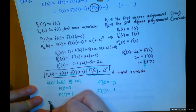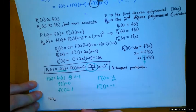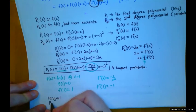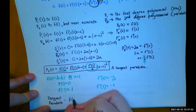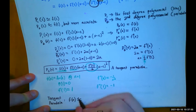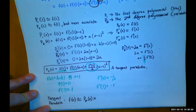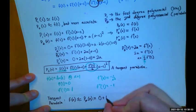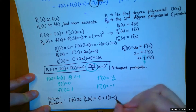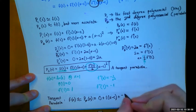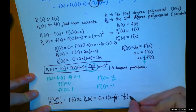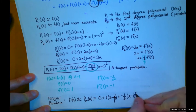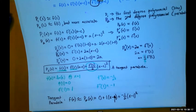So, our parabola, our tangent parabola, is approximately equal to our function. That's not supposed to be C. It's supposed to be a 1. Sorry.